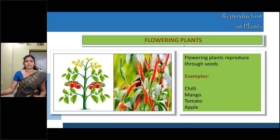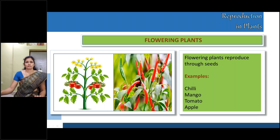Now in detail, let us see flowering plants. Look at the pictures of flowering plants — can you recognize this plant? Yes, tomato. Can you recognize this fruit? Chillies. Flowering plants reproduce through seeds. Examples are tomato, chilies, and mangoes.